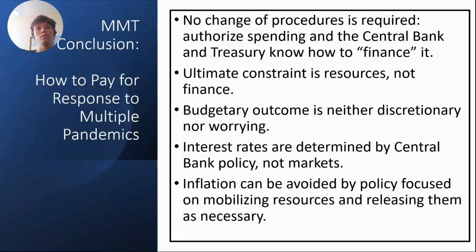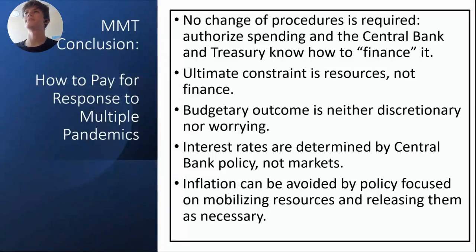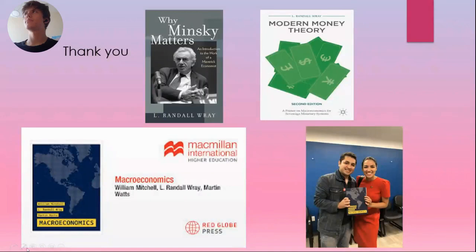Understanding how government finances work allows us to reclaim the useful tool of fiscal policy. No change of procedures is required — Congress authorizes the spending and the central bank and treasury know how to finance it without new procedures. The ultimate constraint is resources, not finance. The budgetary outcome is not fully discretionary because it depends on the other two sectors. Interest rates are determined by central bank policy, not markets. Inflation can be avoided by policy focused on mobilizing resources and releasing them as necessary.